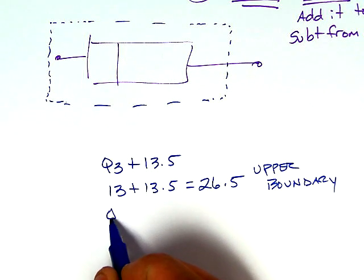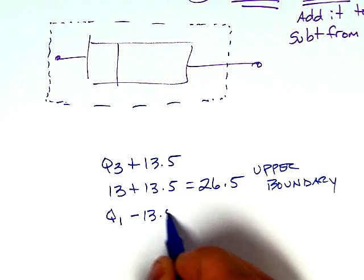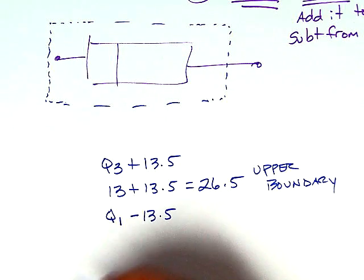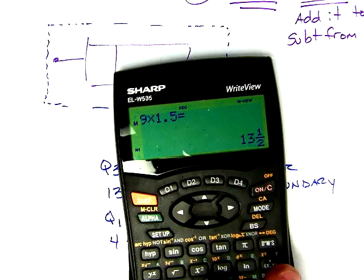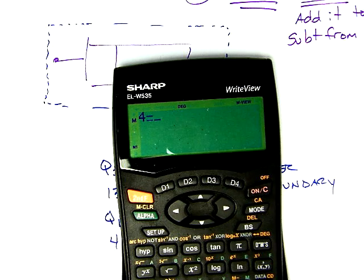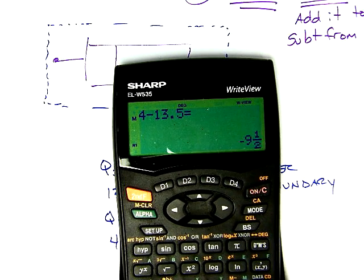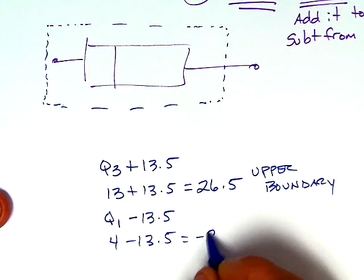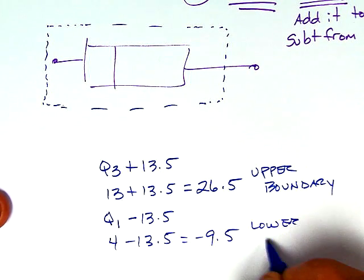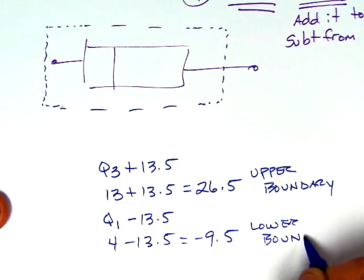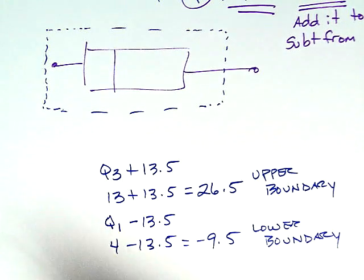Then we're going to subtract it from Q1. We want to start with Q1 and subtract 13.5. Q1 in this problem was 4, so 4 minus 13.5—the calculator gives me negative 9 and a half. So I'm going to write negative 9.5. That right there becomes my lower boundary or my lower limit.